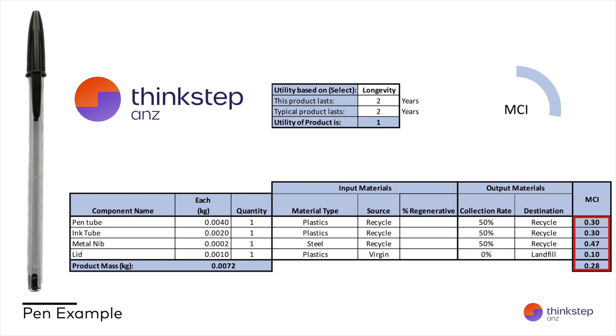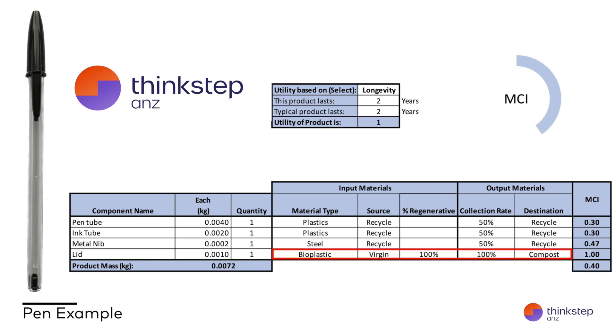What if we're now concerned about all those lids that are going missing and what these might be to our reputation if they end up in the oceans or littering the streets? We'll update the calculation again and this time we will use a home compostable bioplastic. We'll also source the feedstock for the lids from a regeneratively managed forest. This has increased the circularity of the lid to 1.0, so perfectly circular, and this has also increased our overall circularity to 0.4 for the whole pen.